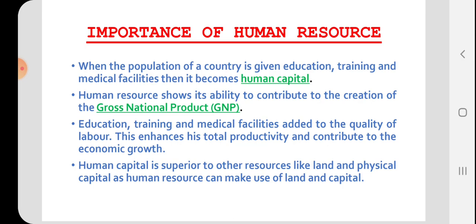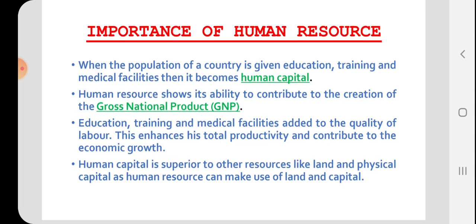Gross national product refers to all economic output produced by a nation's normal residents, whether they are located within the national boundary or abroad. That is what we call gross national product.